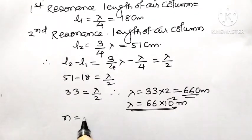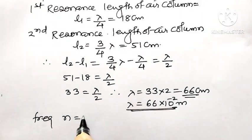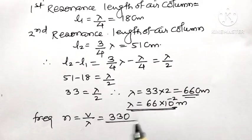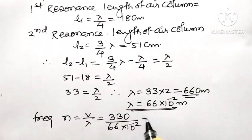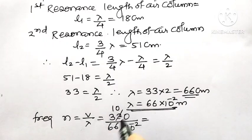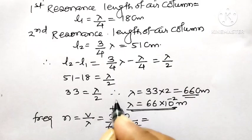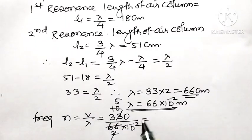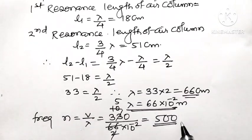Frequency N equals V divided by lambda. Velocity of sound is given as 330, divided by wavelength 66 into 10 to the power minus 2. The 10 to the minus 2 goes to the numerator becoming 10 squared, so 5 multiplied by 100 equals 500 hertz.